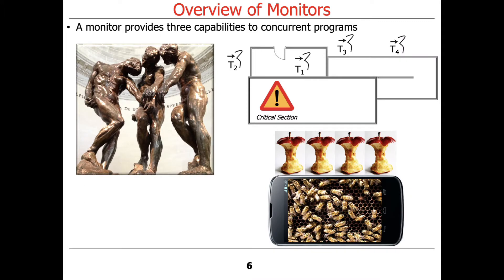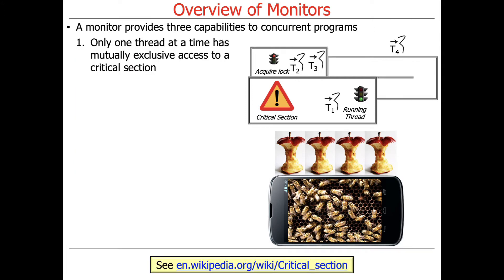A monitor, as a concept, provides three capabilities to concurrent programs. We're going to visualize this, assuming we're running on a computing device with multiple cores. Capability number one: a monitor ensures that only one thread at a time has mutually exclusive access to a critical section. There might be a bunch of threads waiting, but only one of them at a time can be in the critical section actually manipulating or reading shared mutable state.